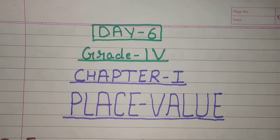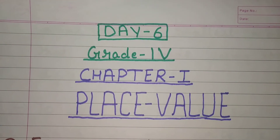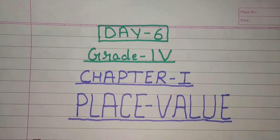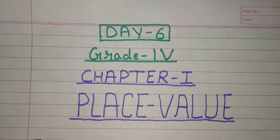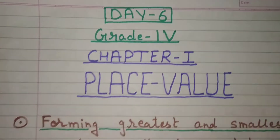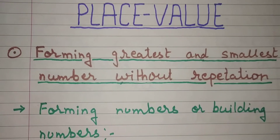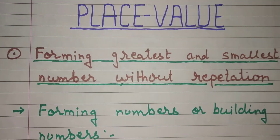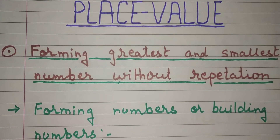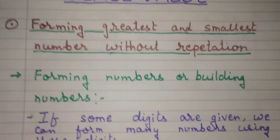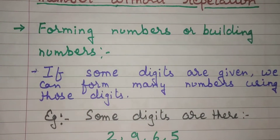Hello students. Today is Day 6, Grade 4, Chapter 1, Place Value. Today we will learn about forming greatest and smallest number without repetition — forming numbers or building numbers.